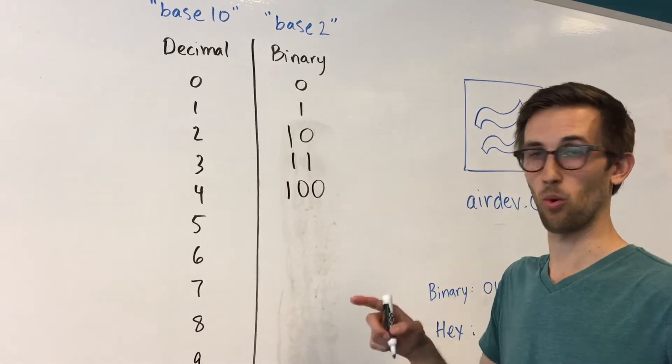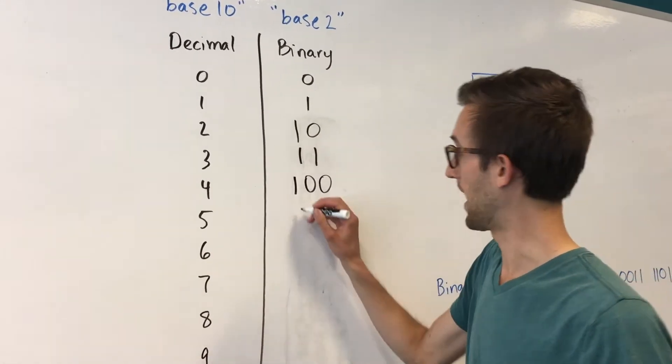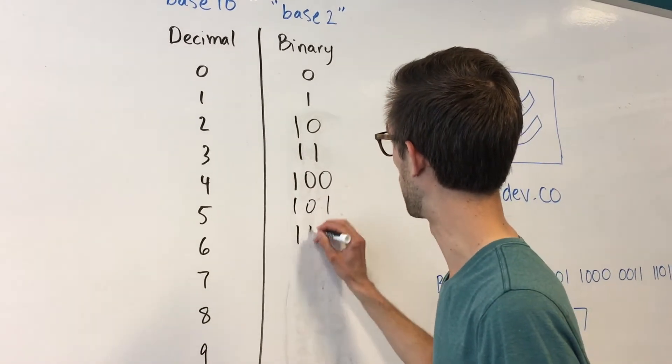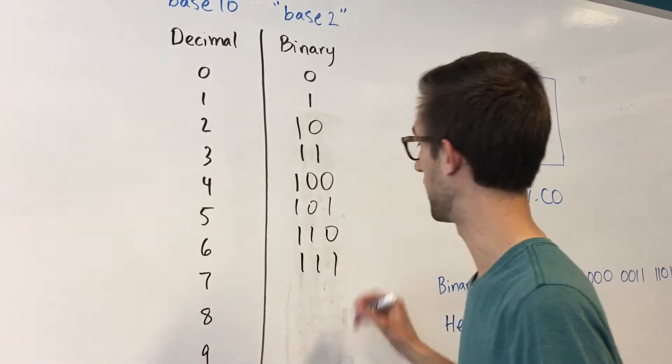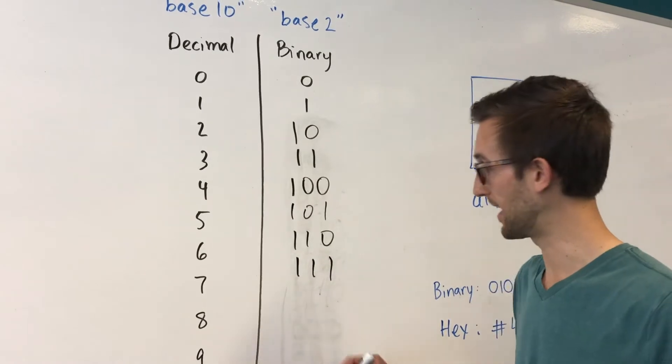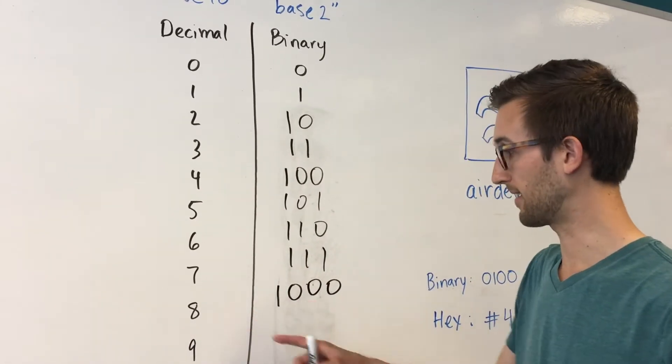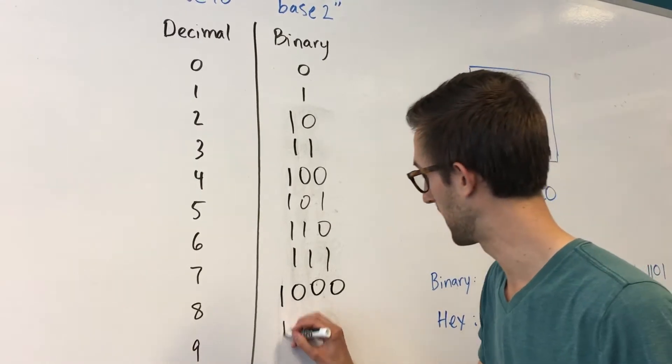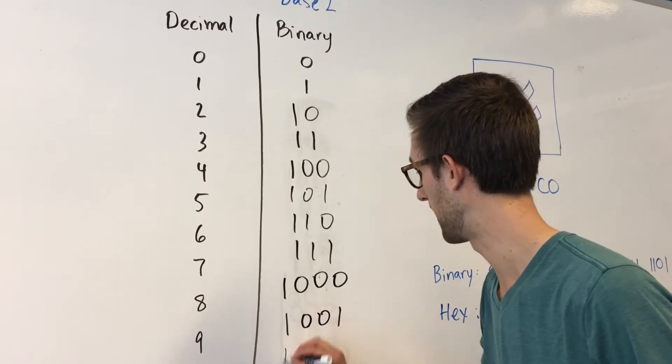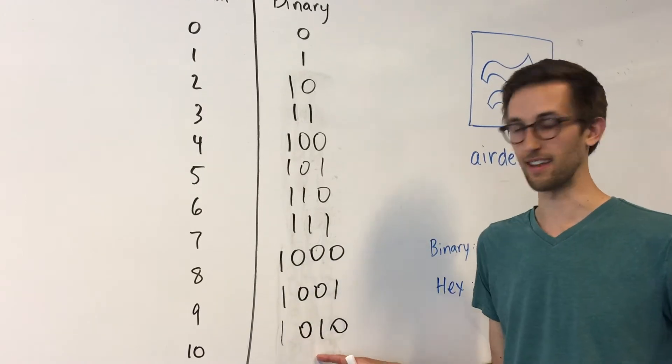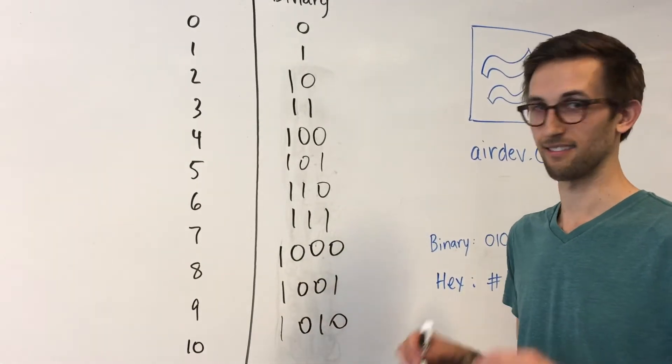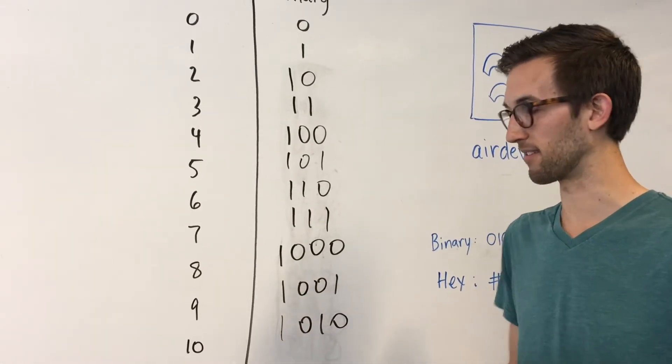Four is expressed as one, zero, zero. Now you've got one, zero, one, one, one, zero, one, one, one. Once again you get to a dead end, you have to add another digit. So eight is one, zero, zero, zero, and then one, zero, zero, one, and one, zero, one, zero. Total coincidence that ten is ten ten. But you learn to appreciate that kind of stuff.